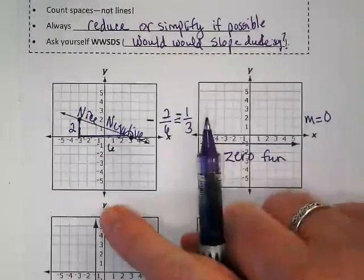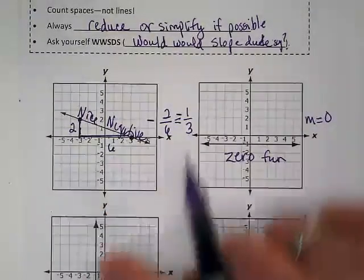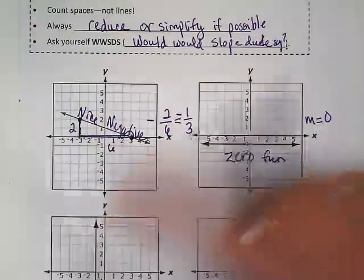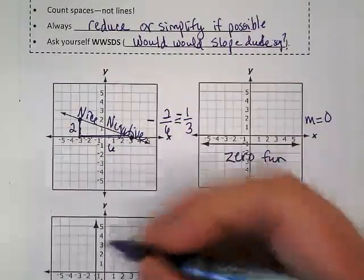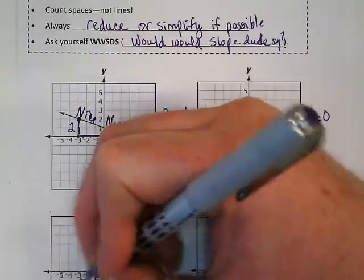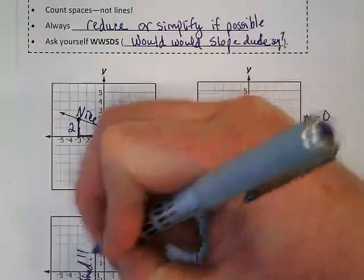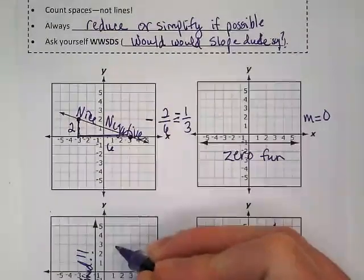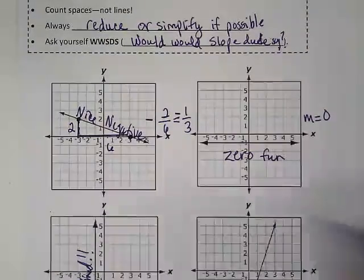What about this one down here? If it's going up or down, slope dude says that curse word in math, which is undefined. So this slope is undefined. It doesn't exist. It's straight up and down. There's no slope.